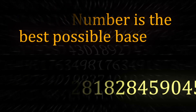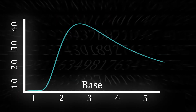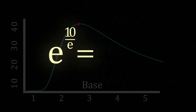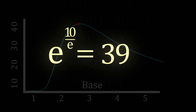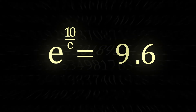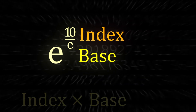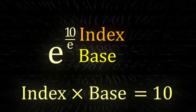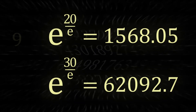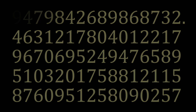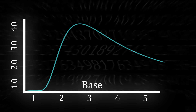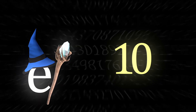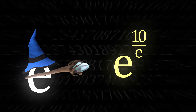Coincidence? I think not. The closer the base is to Euler's number, the larger the value gets, resulting in the largest possible integral split of 10 being E to the E divided by 10, which is around 39.6. Keep in mind that the index multiplied by the base has to equal the original number — in this case 10. You can try this with every single number: 20, 30, 100 even, but Euler's number will still be the best possible base every single time. It seems like black magic, as if Euler's number needed another excuse to show up in a completely unrelated area.